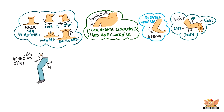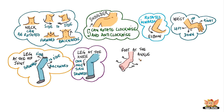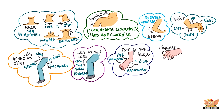The leg at the hip joint can be rotated partly and moved side to side, forward and backwards. The leg at the knee can only turn inwards. The foot at the ankle can move side to side, forward and backwards. Fingers can bend inwards. These are the places where our body moves at different angles.